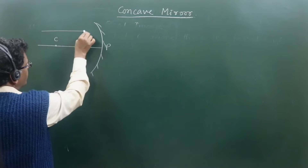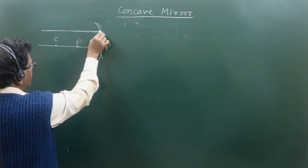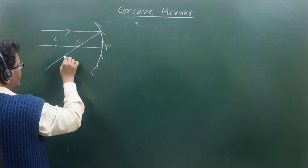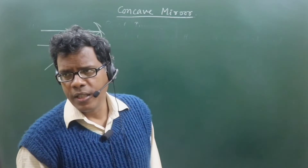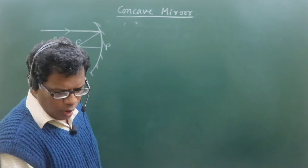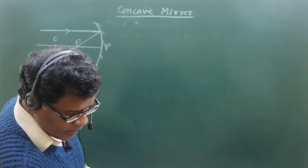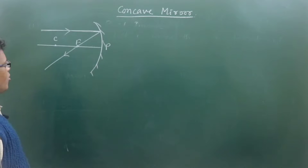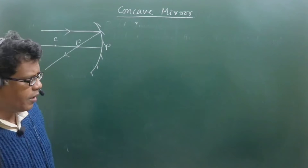The first point is: if I draw an incident ray parallel to the principal axis, then after reflection that light ray will definitely pass through the focus in every case. Any incident ray drawn parallel to the principal axis in a concave mirror will pass through the focus. This is the first concept of ray diagrams.